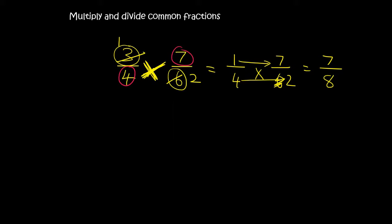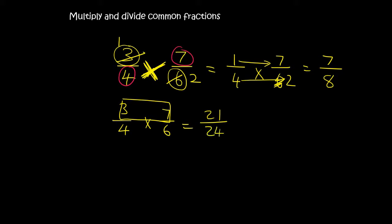Let's say you didn't cross-cancel. Then you would have 3 over 4 times 7 over 6, and multiplying top times top gives 21 and bottom times bottom gives 24. But you should always try to simplify your answer. What number fits into 21 and 24? The number 3 — it fits into 21 seven times and into 24 eight times. So we still end up with 7 over 8.